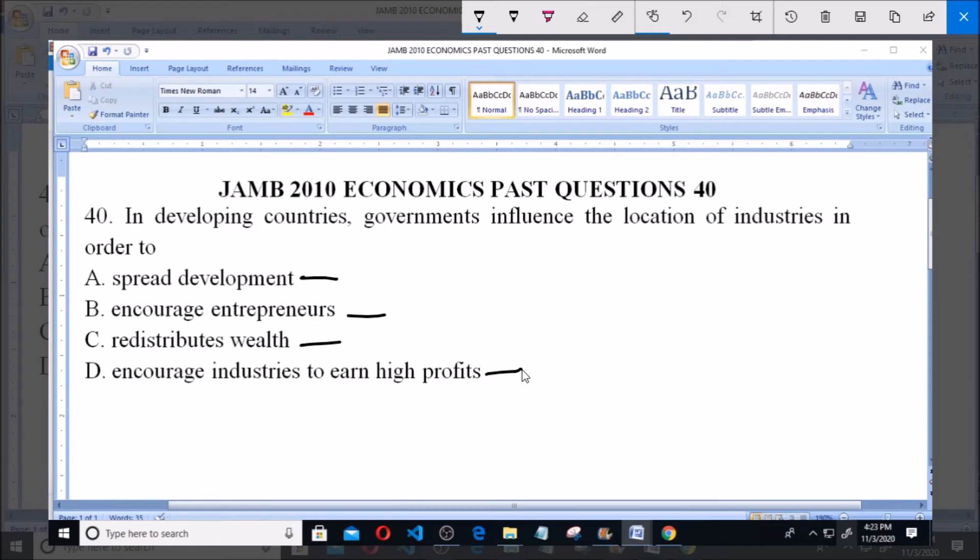And political constitution. So from our question: In developing countries, governments influence the location of industries in order to - Option A says to spread development. Thank you.